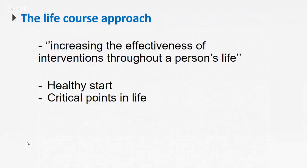A life course approach aims to increase the effectiveness of interventions throughout a person's life. It focuses on two key points: first, you must have a healthy start — being well taken care of from birth. Second, it looks at critical points in life, such as whether you get enough nutrition or vitamins while growing, and whether, when aging, the facilities around you are age-friendly enough to prevent disability.